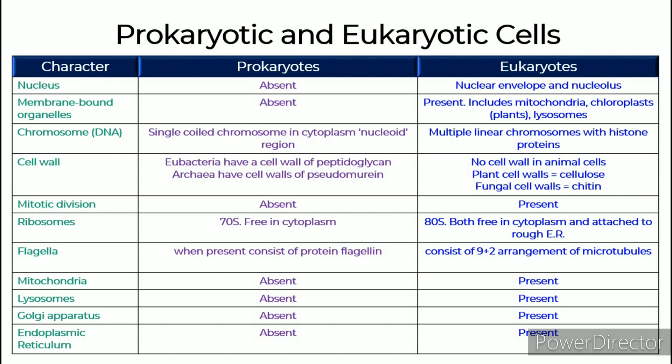Cell wall: Prokaryotes — Eubacteria have a cell wall of peptidoglycan. Archaea have cell walls of pseudomurein, whereas in eukaryotes there is no cell wall in animals. Plant cell walls are made of cellulose and fungal cell walls are made of chitin.